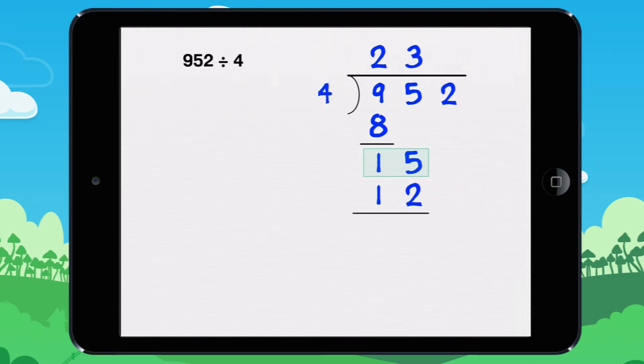We need to find the remainder. 15 minus 12 equals 3. The remainder is 3.